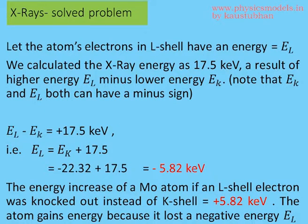The second part asks what is the energy increase of the atom if an L-shell electron is knocked out instead of a K-shell electron. When we knock out an L-shell electron, the atom gains energy because it lost a negative energy of -5.82 keV, so the energy increase is +5.82 keV.